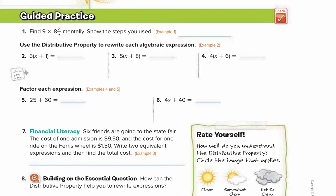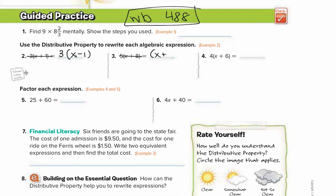Now we're going to go to workbook page 488. We're going to do problems 2, 3, and 4, but we're going to change them. Change number 2 to 3 times x minus 1, change number 3 to x plus 8 times 5 in the back, and number 4 to 4 times 2x plus 6.